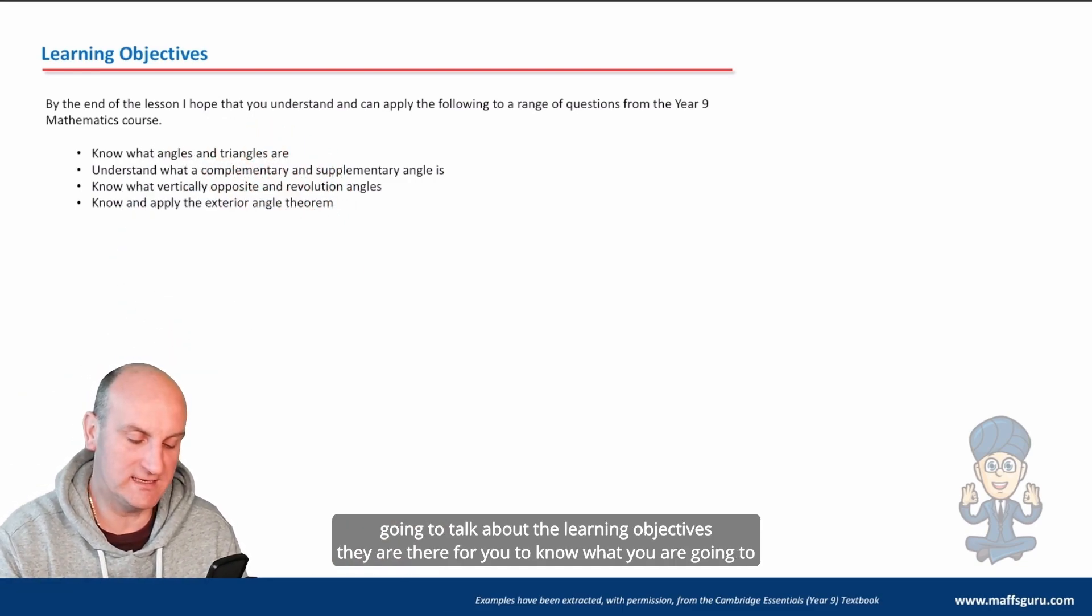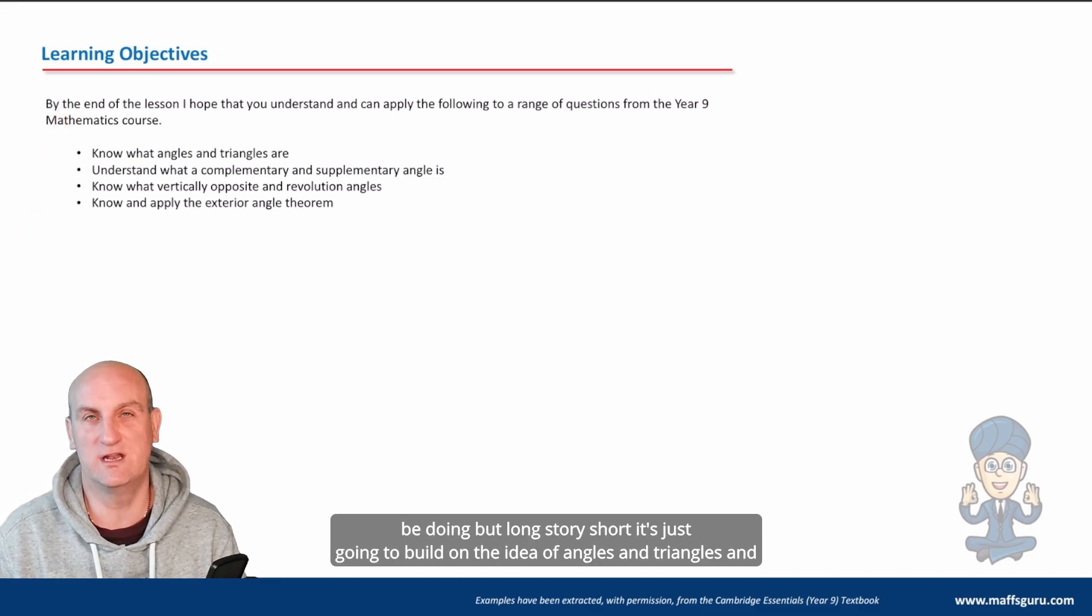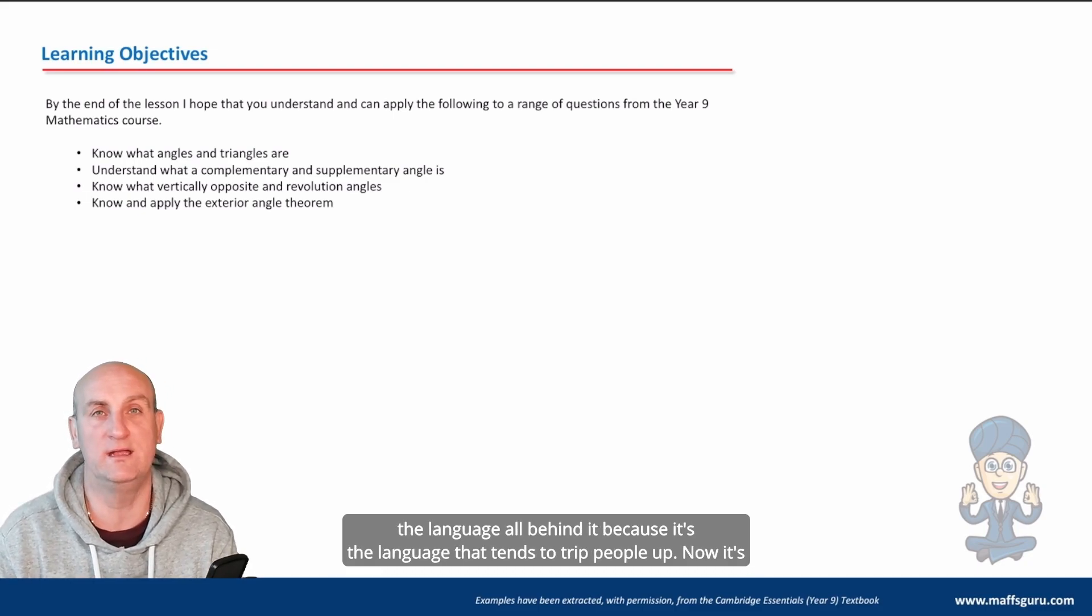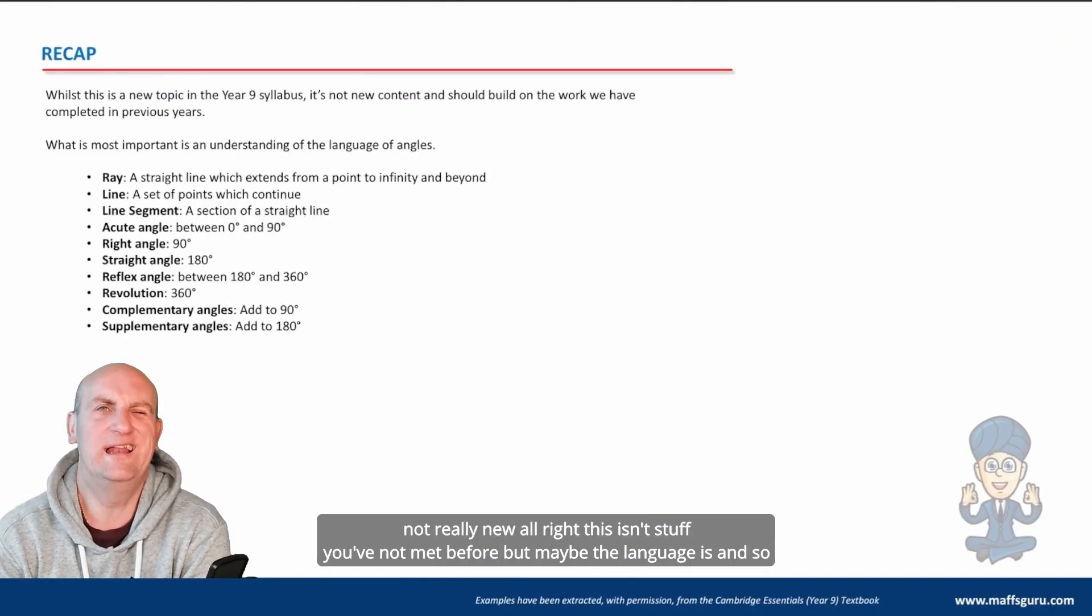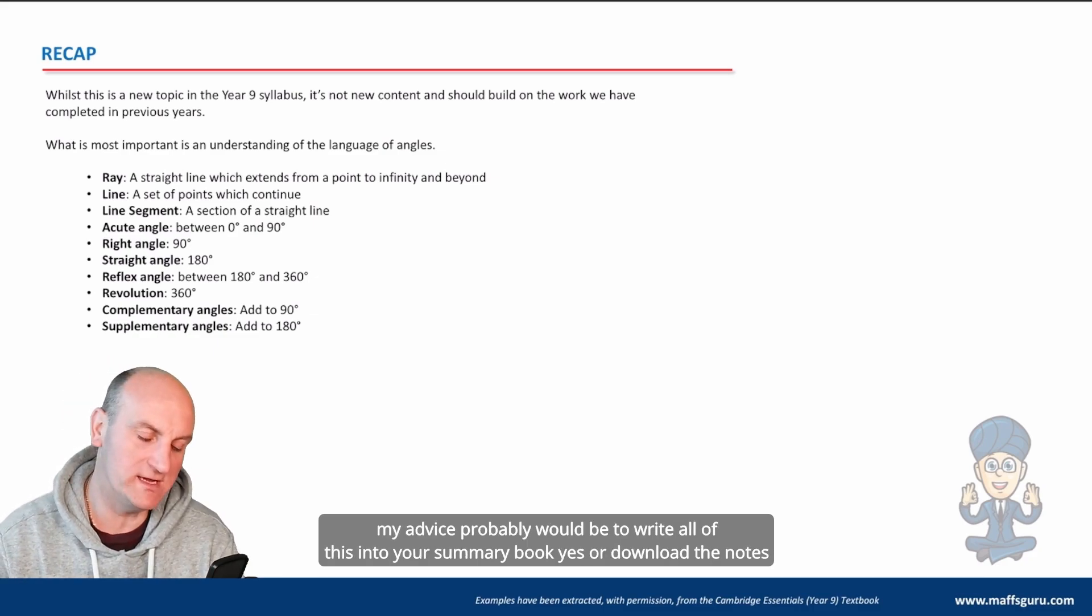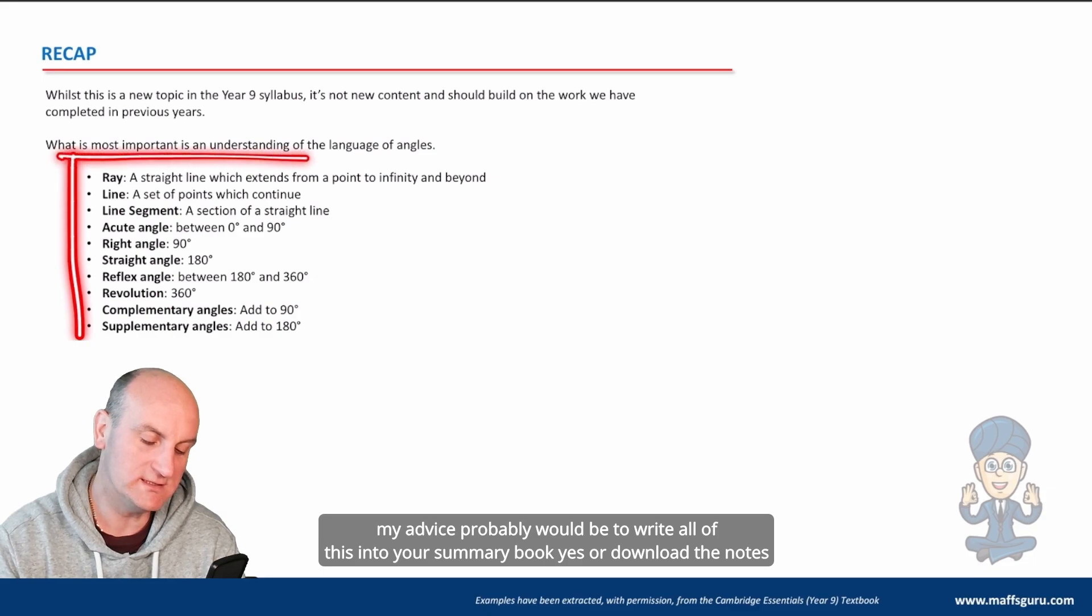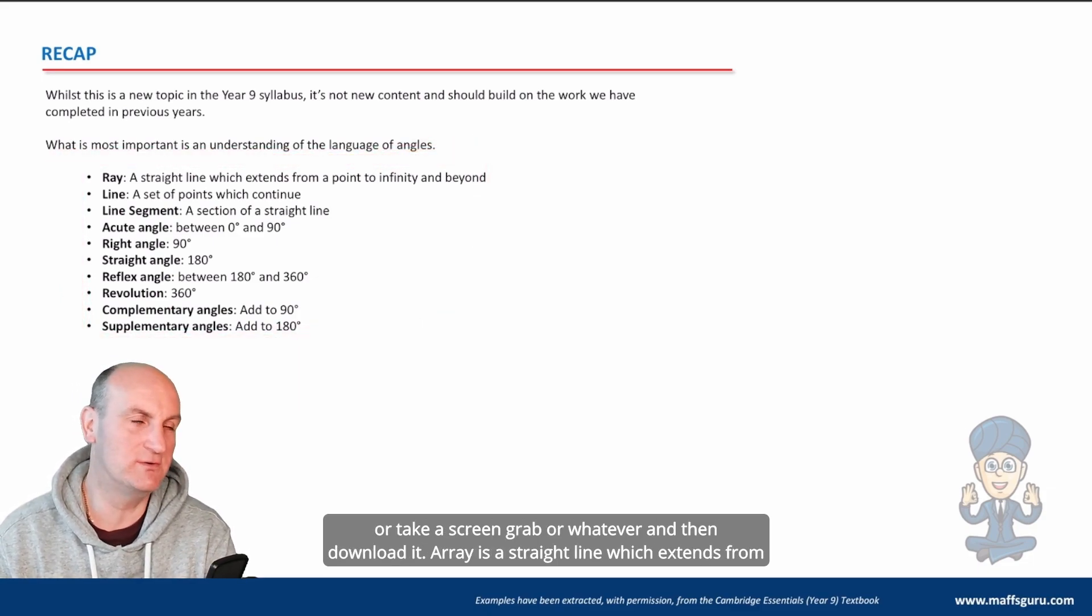I'm not going to talk about the learning objectives; they are there for you to know what you are going to be doing. Long story short, it's just going to build on the idea of angles and triangles and the language all behind it, because it's the language that tends to trip people up. This isn't stuff you've not met before, but maybe the language is, and so my advice would be to write all of this into your summary book or download the notes or take a screen grab or whatever.